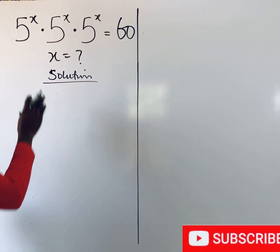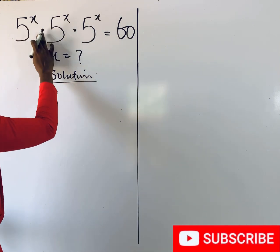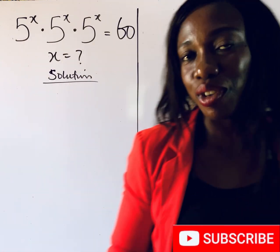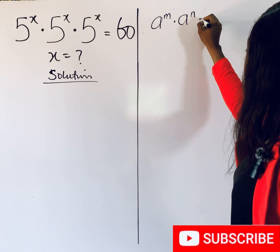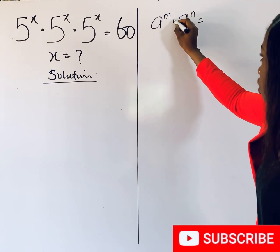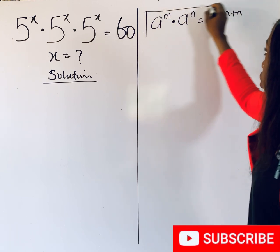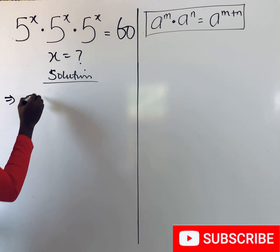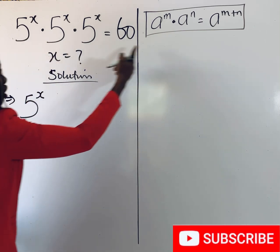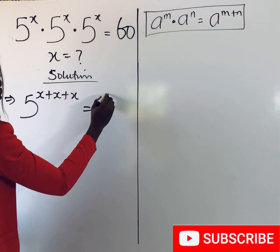Observe that the base 5 is repeated and the operation is multiplication. Remember this rule of exponents: for every a^m multiplied by a^n, because the bases are the same, you just add the powers. Pick one of the bases and add the powers. Applying it to the left side, we have 5 to the power of x, and we add the three powers — and this equals 60.